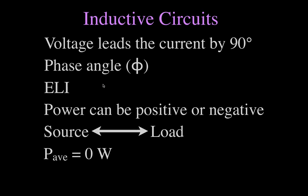On this summary slide: for purely inductive circuits, the voltage leads the current by 90 degrees — that is the phase angle. For capacitive circuits, the phase angle is also 90 degrees but the current leads the voltage. For resistive circuits, the phase angle is zero because voltage and current are in phase. We use the common acronym ELI the ICEman — the 'L' tells us we're talking about inductive circuits, and for inductive circuits the voltage leads the current.